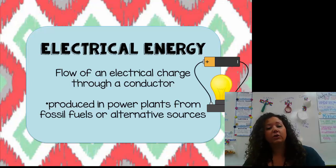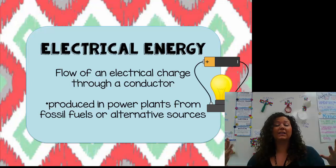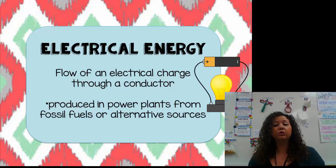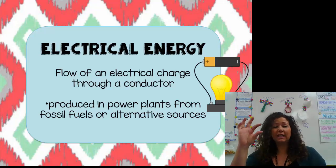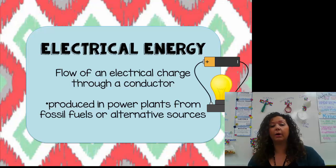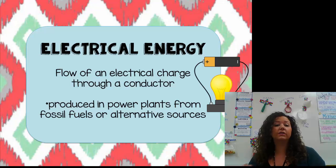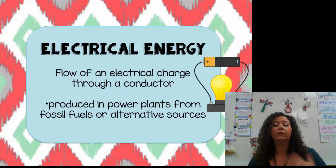The E stands for electrical energy. We use this every single day — if we didn't have electrical energy, so many things in our world would be so different. Electrical energy is the flow of electrical charge through a conductor. We have a circuit pictured here: wires with a battery, which is the energy source, hooked up to something like a light bulb to turn on. Electrical energy powers our lights, our electronics, and all of those things we love to use every day. It is produced in power plants and comes from either fossil fuels or alternative sources, which we'll talk about later in the year.